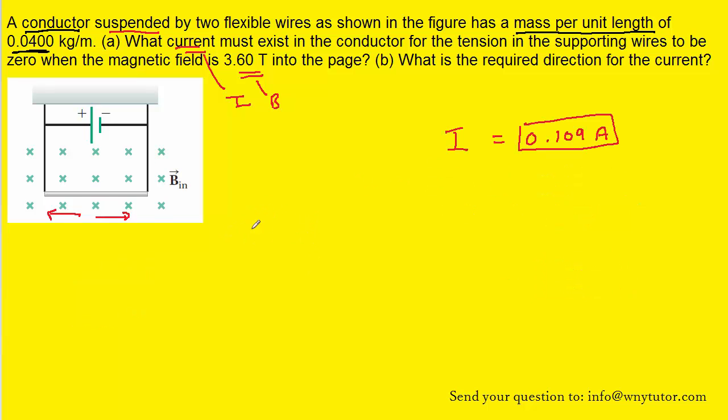Now on to part B. Let's recall that we said the magnetic force, which we labeled FB, was directed upward. We know the magnetic field is pointing into the page. And to figure out the direction of the current, we're going to be using a right-hand rule.